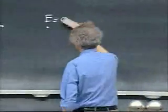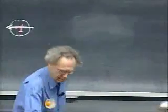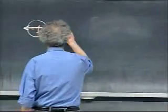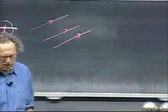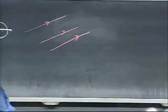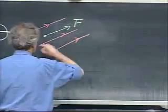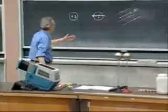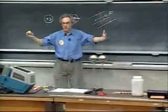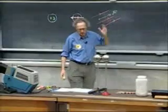If an electric field line is straight, and I release a positive charge there, it would experience a force exactly in the direction of the field lines. It would accelerate in that direction and always stay on the field lines, if released with zero velocity.